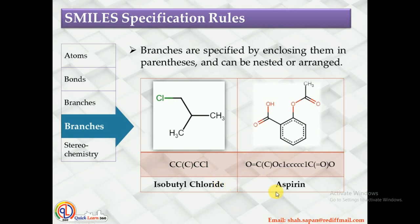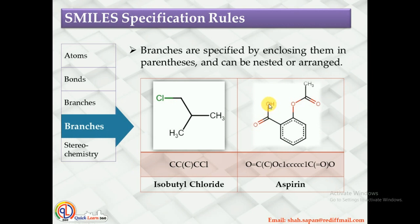Let us see one more example: aspirin. The notation starts from the oxygen: O=C, and the methyl branch is given in brackets as (C). Then comes the benzene ring as lowercase c1ccccc1. From this benzene c1, it is connected with the carboxyl carbon outside the ring, represented as C(=O)O. This represents that this carbon and OH are connected with a single bond, and this carbon and oxygen are connected via a double bond.